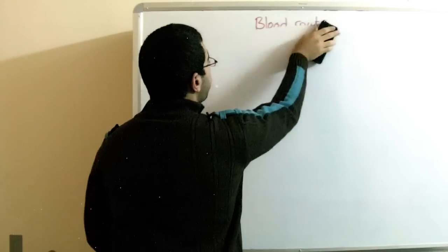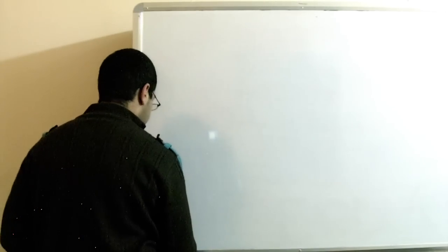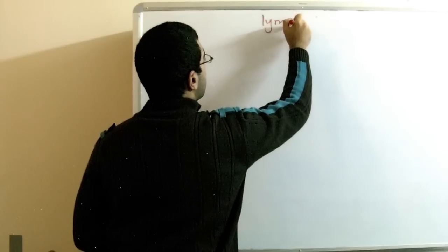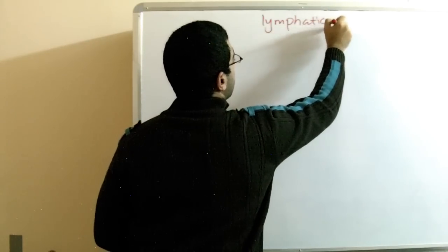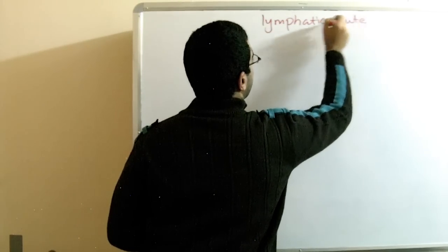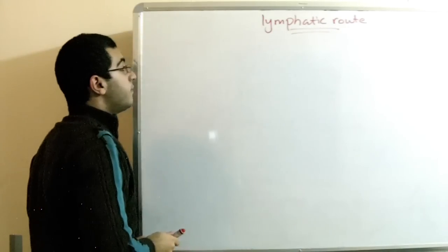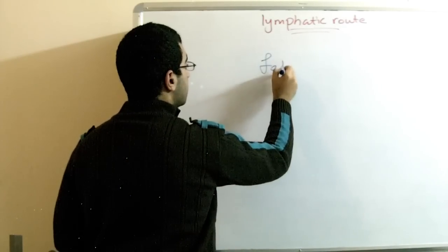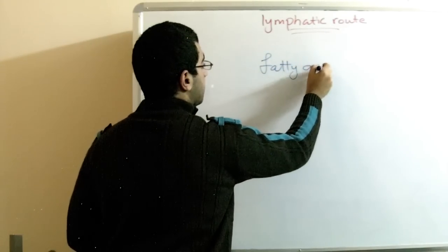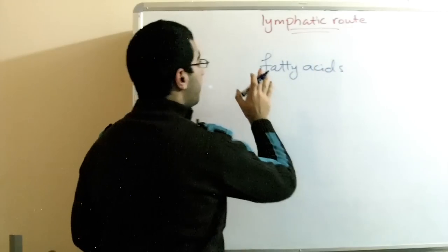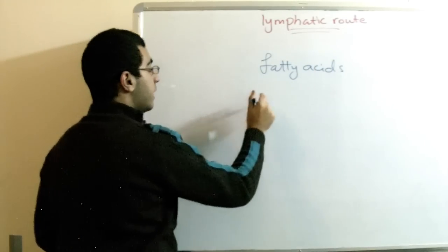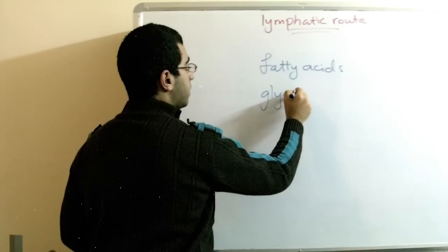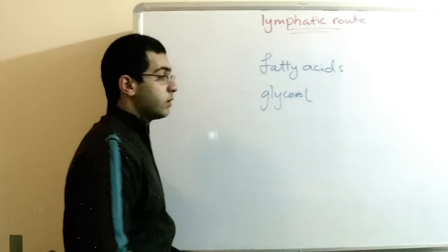The second thing is the lymphatic route. Here in the lymphatic route we have only two types of food, which are fatty acids and glycerol. These are absorbed through the lacteal and not the blood vessels.